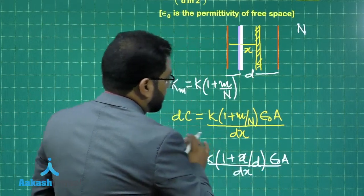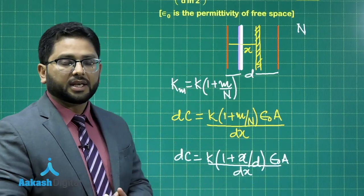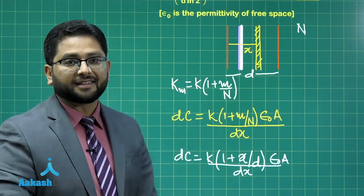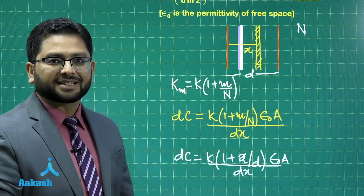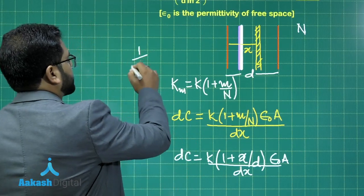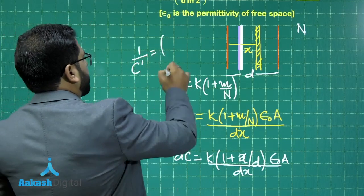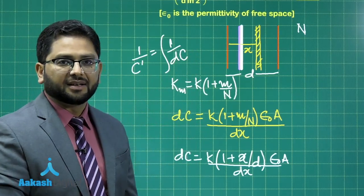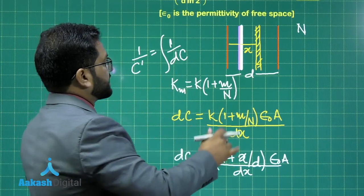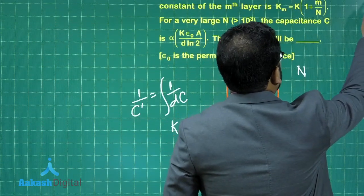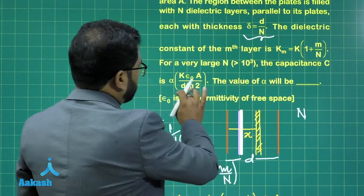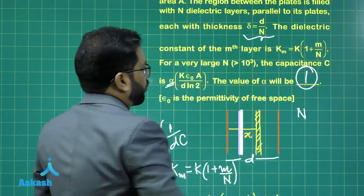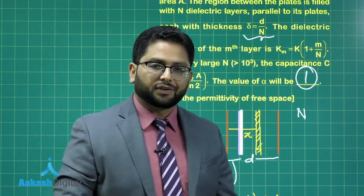But we have to integrate it. But remember, all those differential parts, they are in series. And if they are in series, the total capacitance, 1 by c dash, would be integral of 1 by dc, with the suitable limit of x from 0 to d. Now, computing this is not a difficulty, at least for this level. And when you solve, and when you equate, the value of alpha will come out to be 1. So 1 is the correct answer for this question.